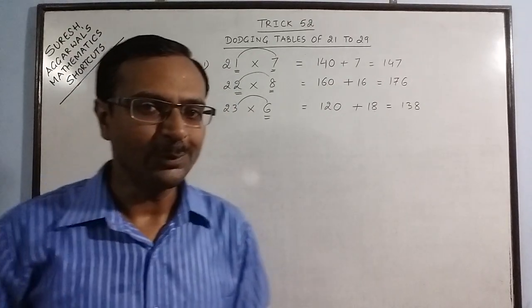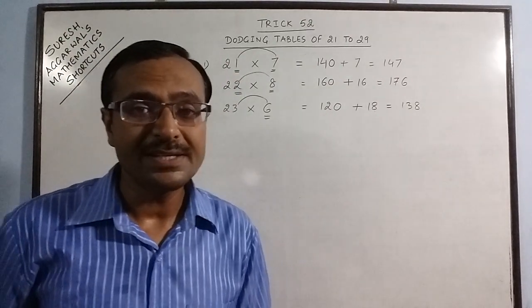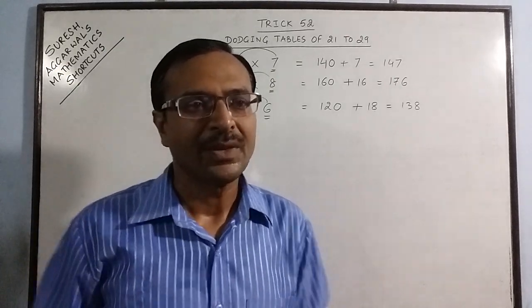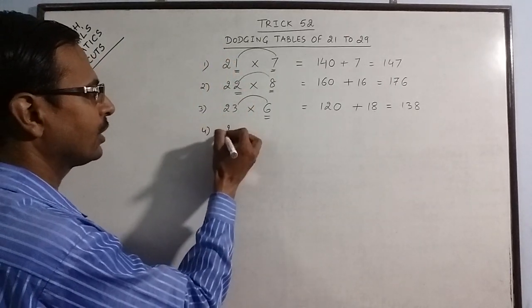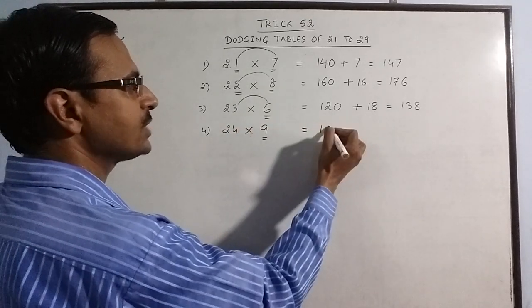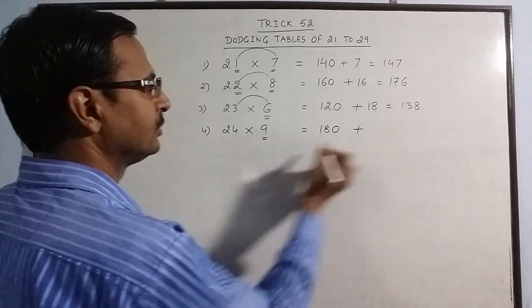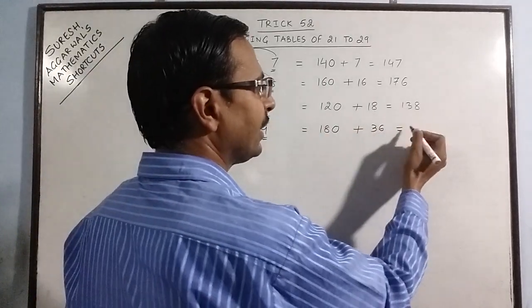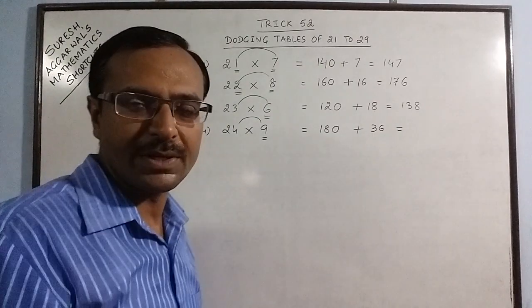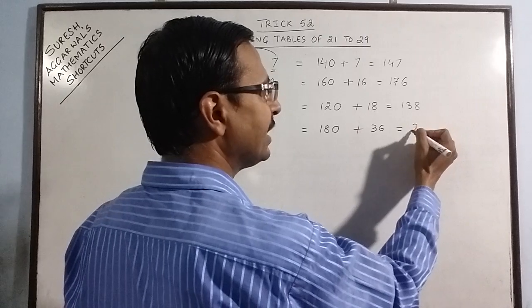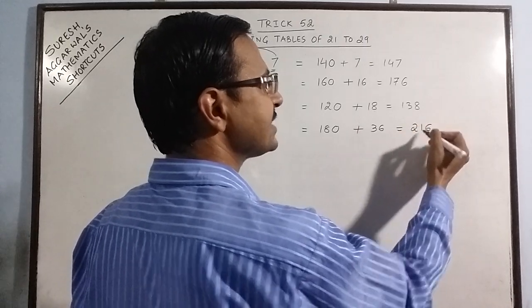Knowing these methods will enable you to save a lot of time in competitive exams. More examples: 24 nines. 9 twos are 18, put a 0, 9 fours are 36. If you have problem adding these numbers, you can split this and add it comfortably: 180 plus 30 is 210, and 6 makes 216.